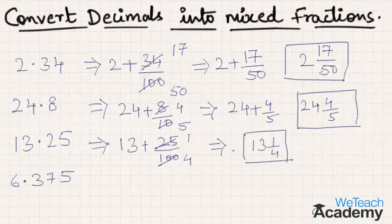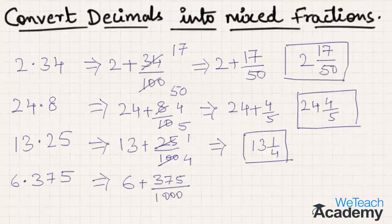Now the fourth example, 6.375. The expanded form can be written as 6 plus the decimal part 375 by 1000. Since we have three decimal places we are dividing by 1000. Simplifying, 125 times 3 is 375 and 125 times 8 is 1000. Hence 6 3 by 8 is the mixed fraction form of 6.375.